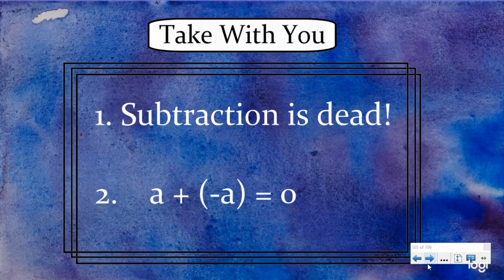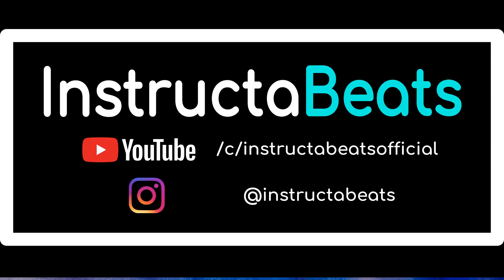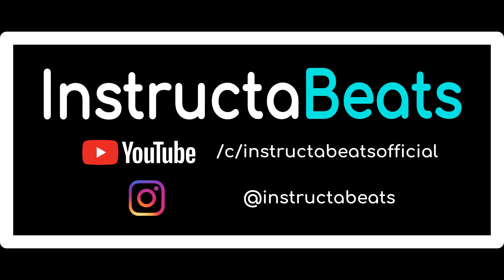Which leads us to what we want you to take with you: number one, subtraction is dead — we're no longer writing things with subtraction. It's always going to be adding the opposite, or adding the inverse. That's shown by this mathematical formula: if you have a — whatever a is, it could be five, six, seven — and you add the opposite of that, that's going to make a zero pair, which means the sum is zero. As always, thank you so much for taking your time to spend with InstructorBeats today. We'd love to know where you're watching from — leave a comment, like the video, and join our InstructorBeats family by subscribing. Check out our negative number song and the rest of our negative number playlist. Thank you. InstructorBeats out.